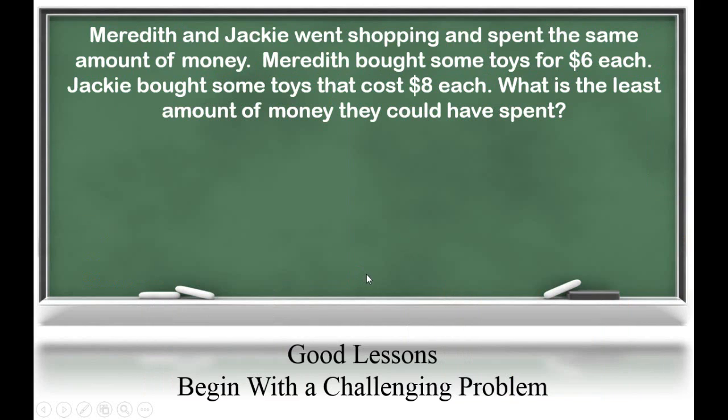Let's look at another problem. Meredith and Jackie went shopping and spent the same amount of money. Meredith bought some toys for $6 each. Jackie bought some toys that cost $8 each. What is the least amount of money that they could have spent? We know Meredith bought toys at $6 each and Jackie bought toys at $8 each, and the girls spent the same exact amount. We're going to list out how much money each could have spent until we find a common multiple.